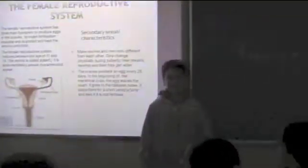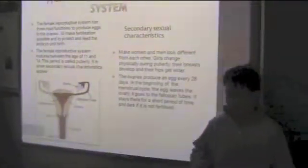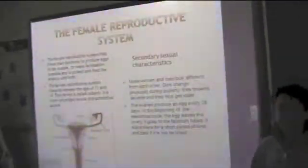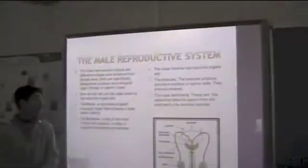The reproductive system has three main functions. First, produce eggs. Second, fertilize a baby. And finally, protect an embryo. The reproductive organs are different shapes and structures from female works.